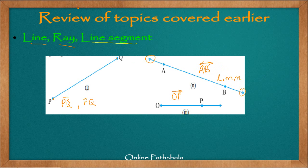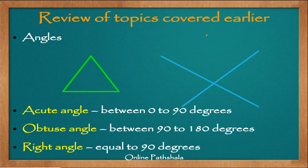So that was about line, ray, and line segment. Now let us quickly review what angles are. Angles are nothing but corners, and corners are formed whenever two line segments or two lines meet. For example, if we look at this figure of a triangle, we can see that there are three angles.